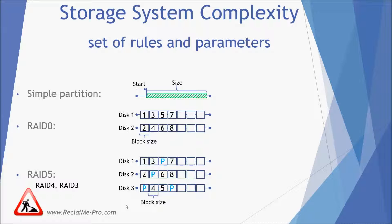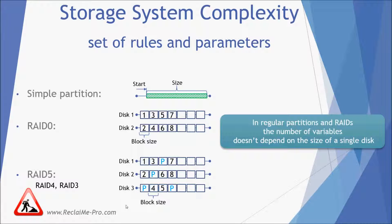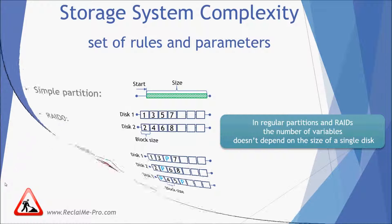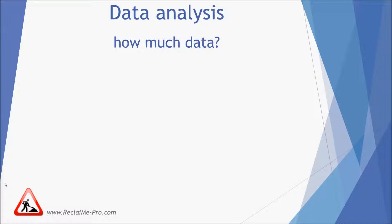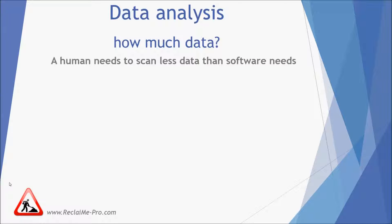A fundamentally important property of these descriptions is that the number of variables and the complexity of the description do not depend on the size of a single disk. To detect the parameters, it is needed to analyze some part of the data. A human needs less data compared to recovery software – he or she can draw correct conclusions using a small amount of data. Obviously, if there is no data at all, it is impossible to detect any parameters. In the extreme case of a blank array, you cannot even distinguish RAID 0 from RAID 5.